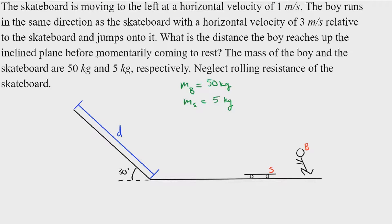Welcome back. We're going to do another dynamics problem. The skateboard is moving to the left at a horizontal velocity of 1 meter per second. The boy runs in the same direction as the skateboard with a horizontal velocity of 3 meters per second relative to the skateboard and jumps onto it. What is the distance the boy reaches up the incline before momentarily coming to rest? The mass of the boy and the skateboard are 50 kilograms and 5 kilograms respectively.